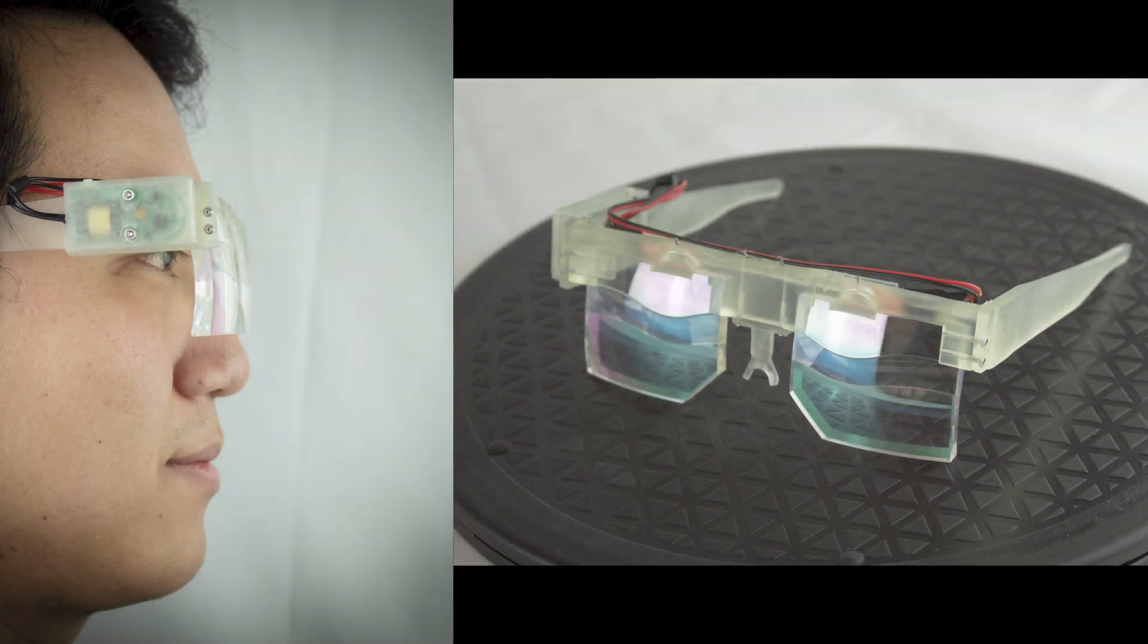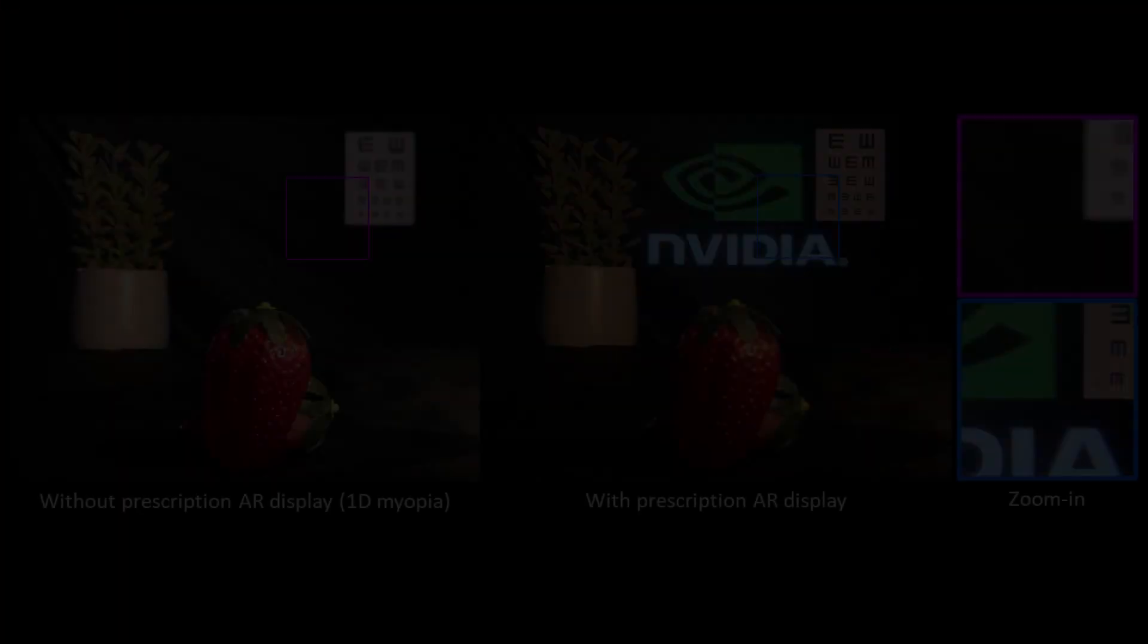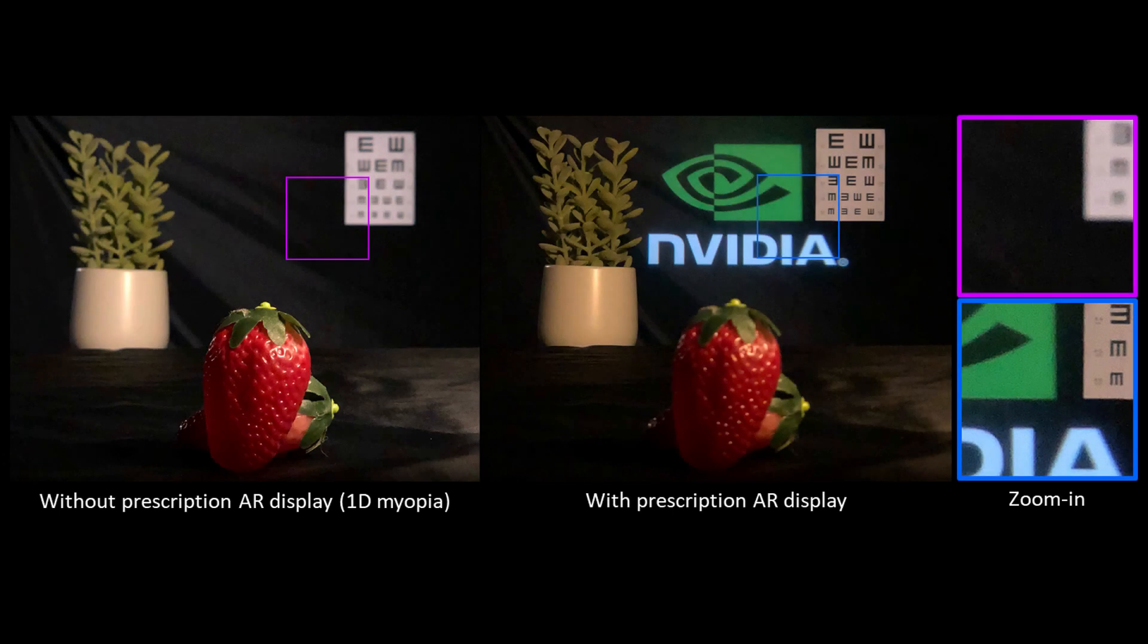We demonstrate prescription AR, a set of 5mm thick corrective lenses with an embedded AR display. This design promises to increase accessibility and integration for users with prescription lenses for myopia, astigmatism, and hyperopia.